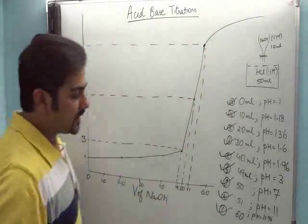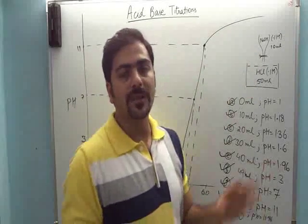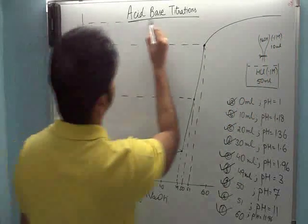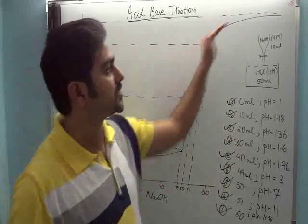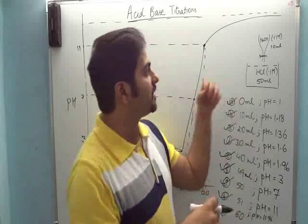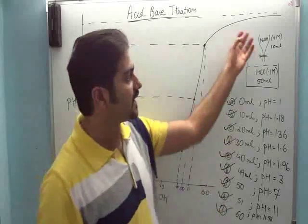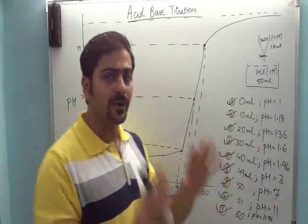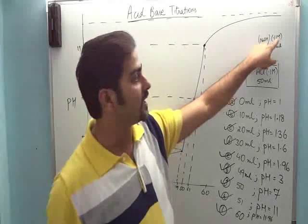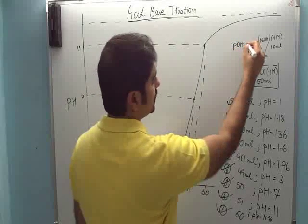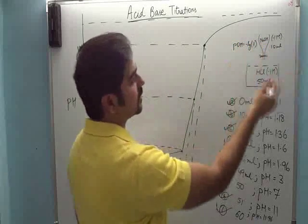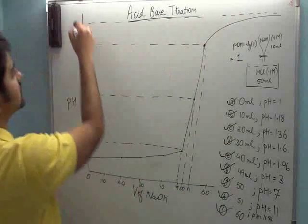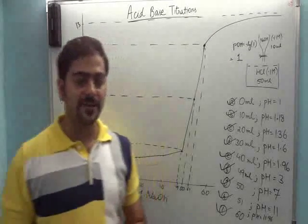Thik hai, ek final edge question bhi banta hai: agar mein infinite amount of NaOH daal dun, toh pH kitna ho ga? Isko kabhi kabhi aise poocha jaata hai: is curve ka agar asymptote banao — matlab what will be the maximum value of pH that can be achieved by dropping infinite amount of NaOH into this solution? Toh agar aapne infinite NaOH isme daal diya, toh effectively NaOH concentration remain karega point one molar. Toh agar yeh NaOH point one molar hai, toh iska POH kitna hoga? Minus log of 0.1 is 1. Toh POH one hai, toh pH hoga 14 minus 1. Toh maximum pH tak yeh curve 13 tak jaata hai.